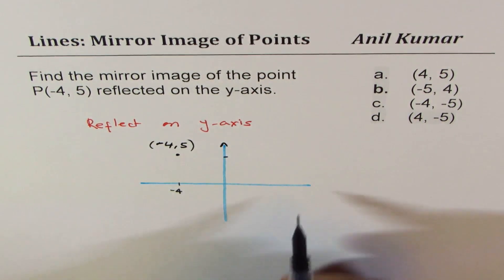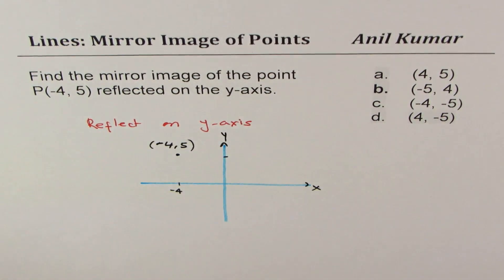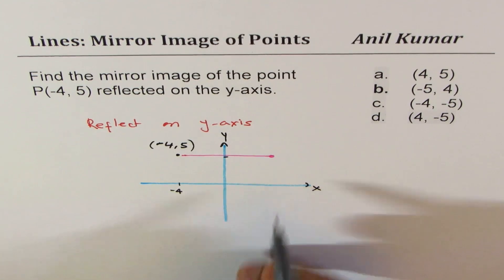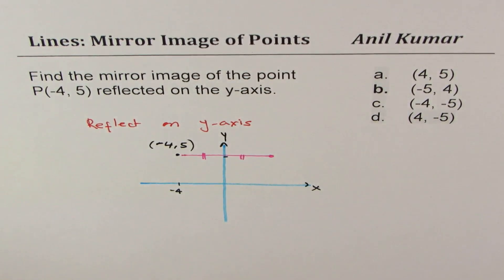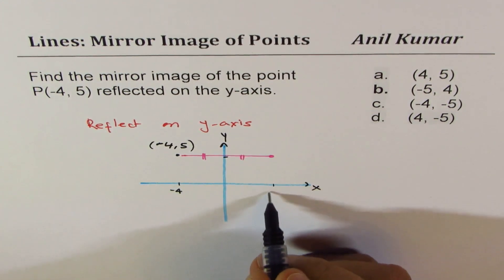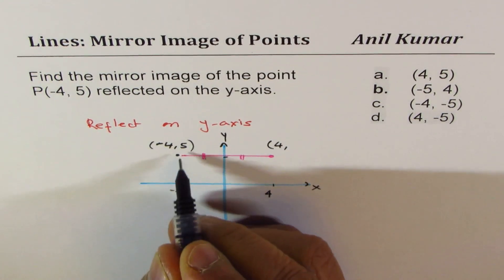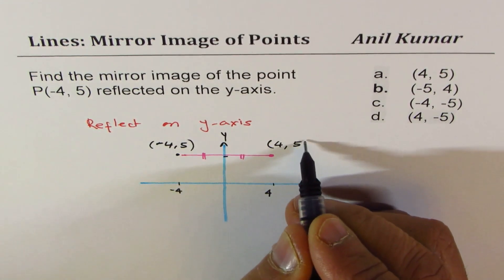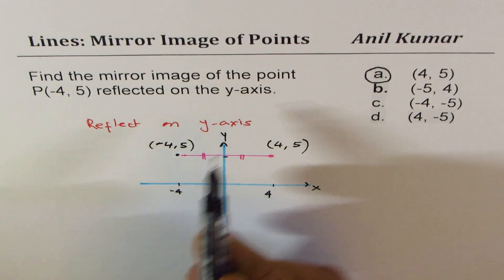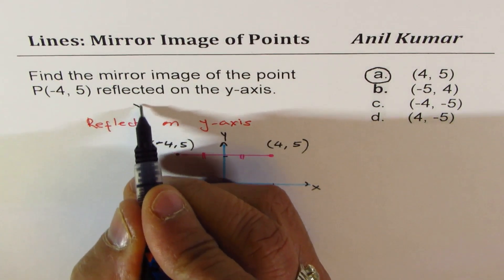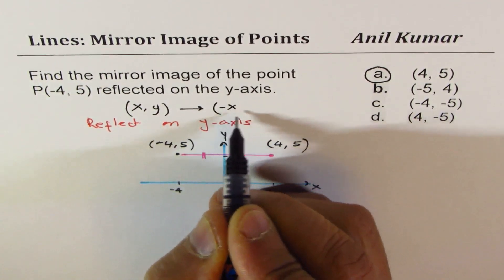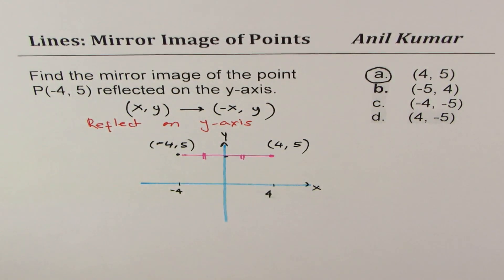We are reflecting it on the y-axis. When you do this reflection on the y-axis, this point will be reflected to the other side, so that these distances are equal. If these distances are equal, then minus 4 becomes plus 4. So the x value becomes 4; however, the height remains the same as 5. So (4, 5) is your image. In general, if you reflect on the y-axis, any point (x, y) will become (-x, y) — the x-coordinate value becomes negative, but y remains the same.